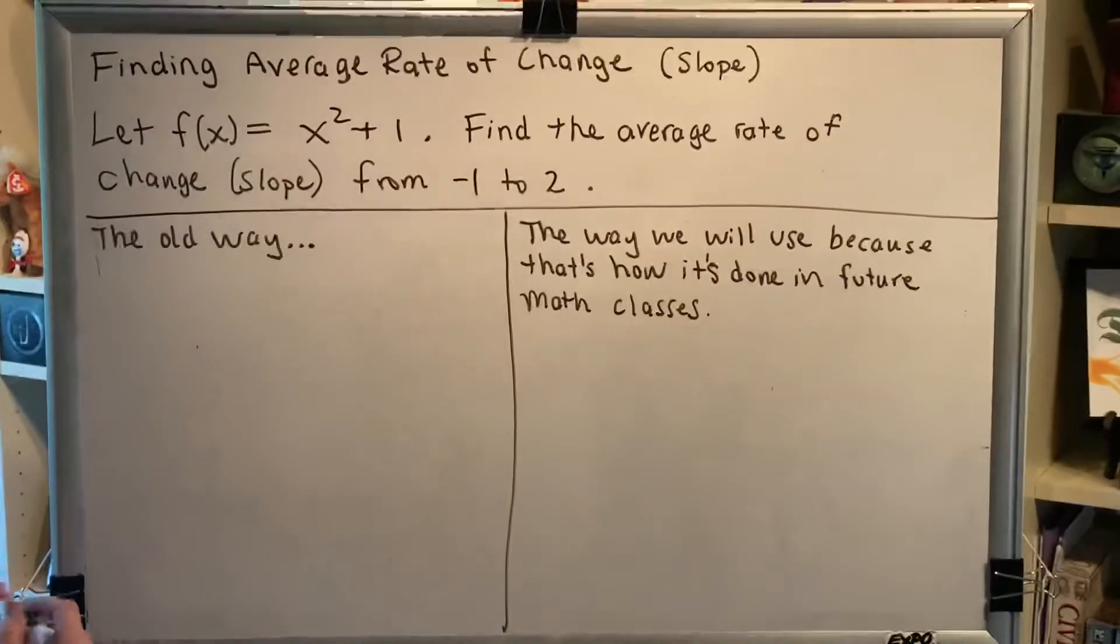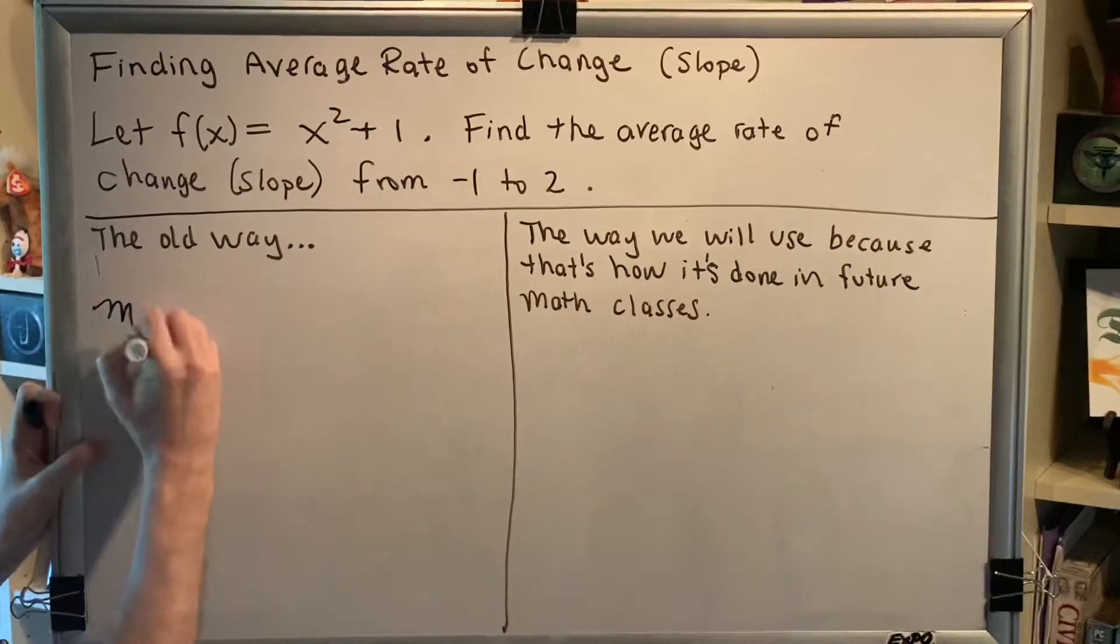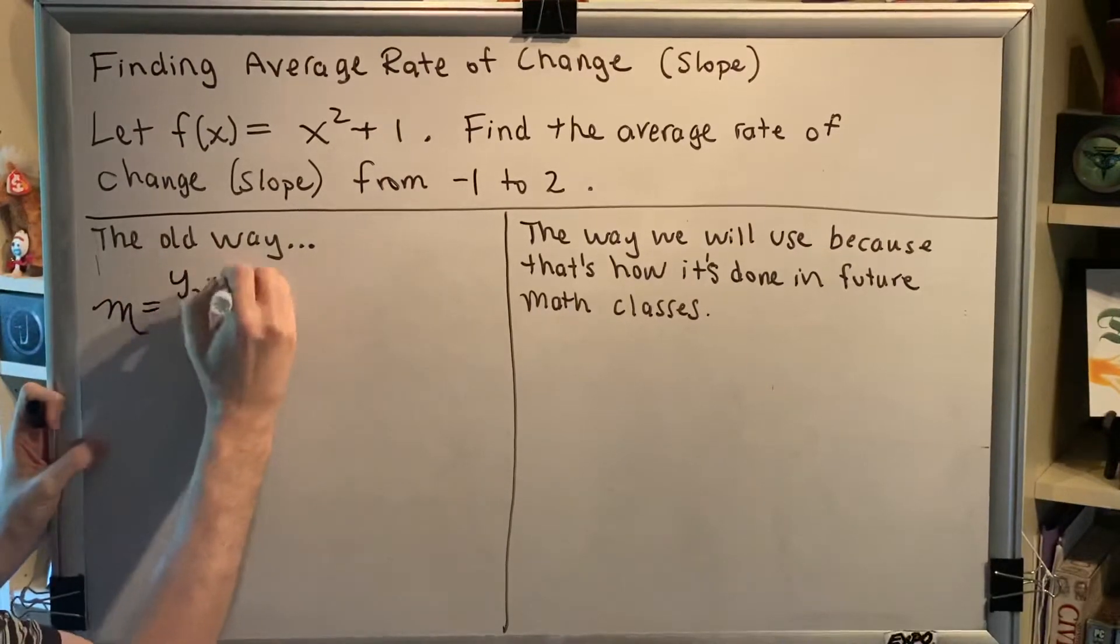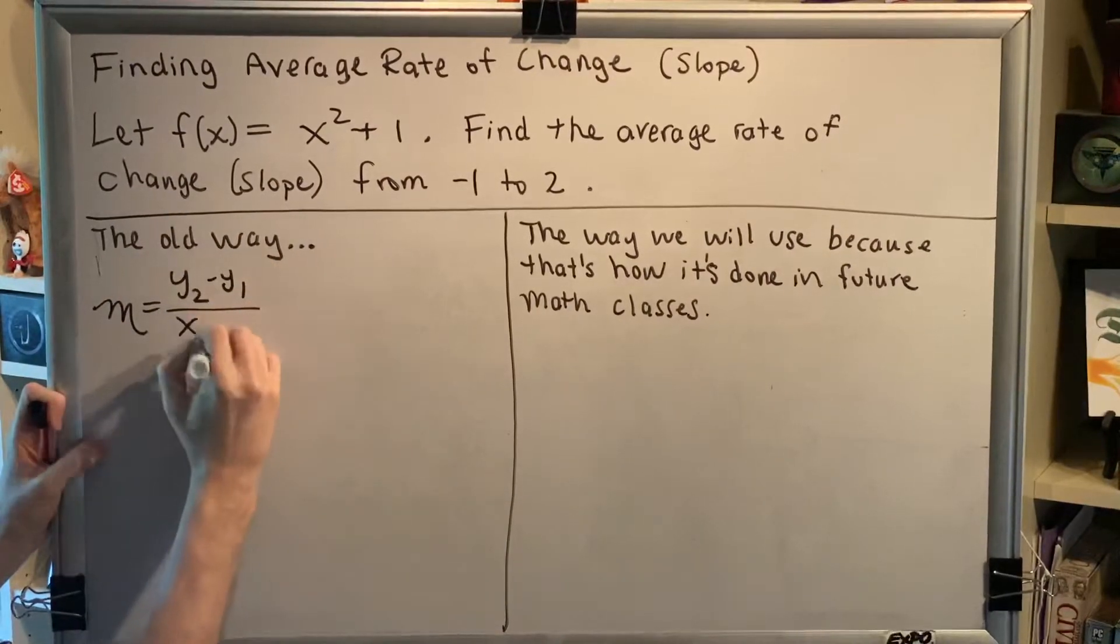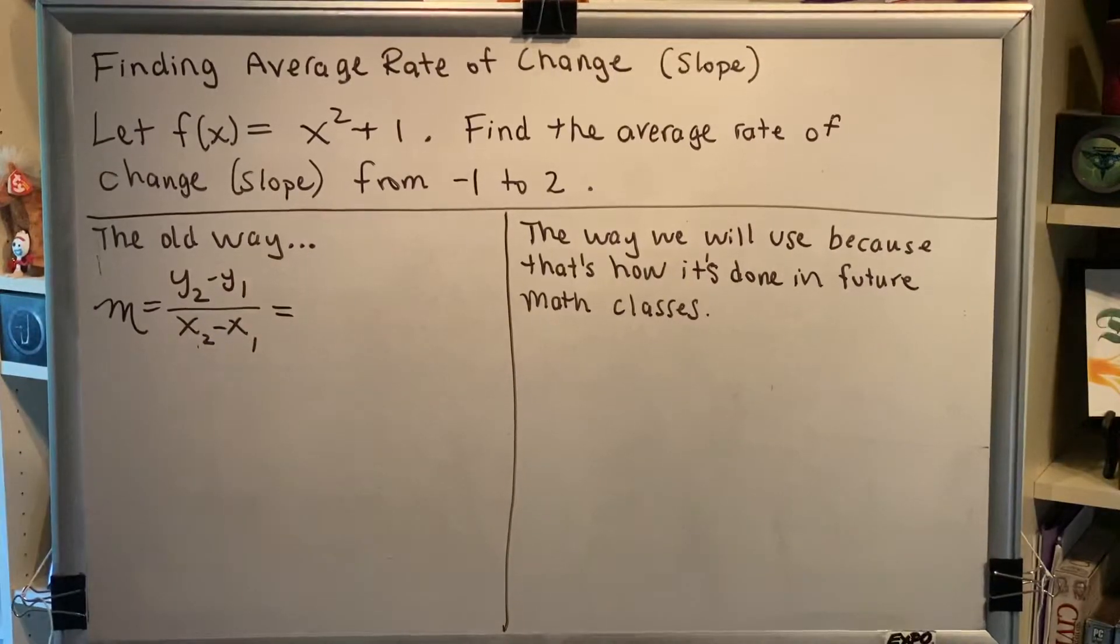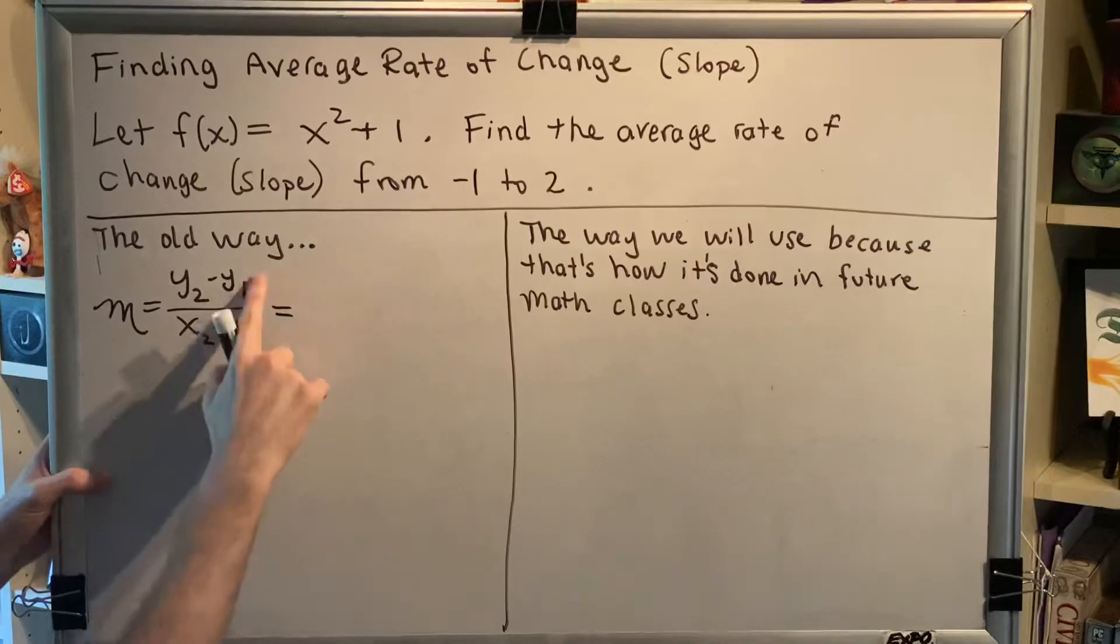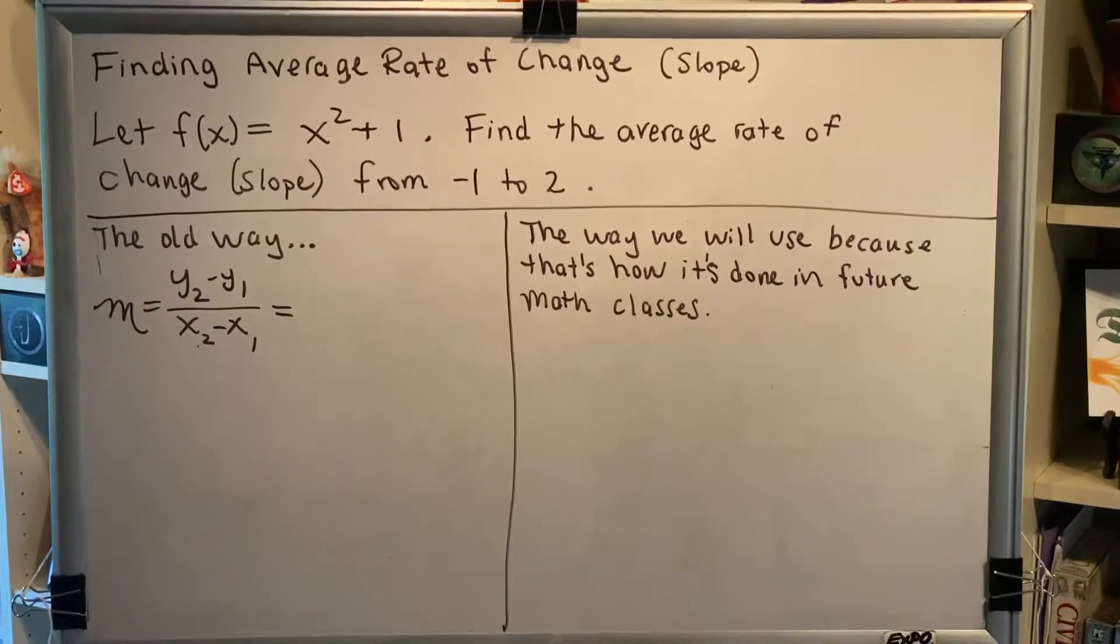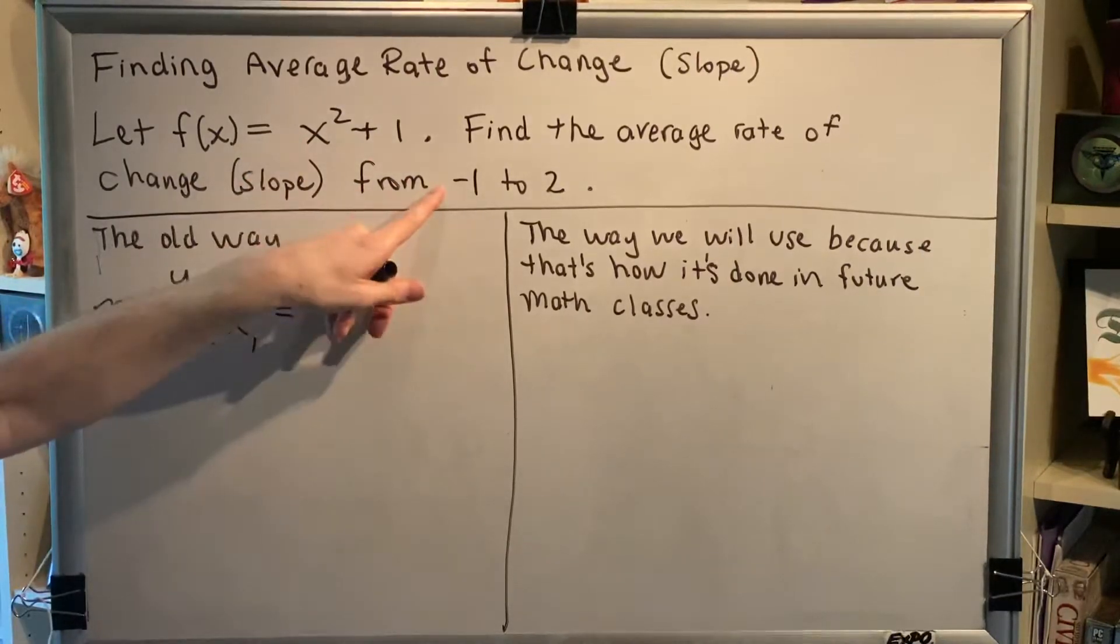Okay, great. So let's go ahead and begin. So the old way of finding slope was to use the slope formula y2 minus y1 over x2 minus x1. And in order to do that you have to have two points x1 y1 and x2 y2. But we don't have two points so we're going to have to come up with our two points. All they gave us is an equation and then these two numbers.